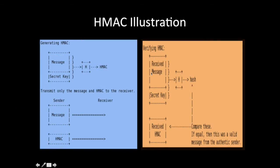On the receiver side, when the receiver gets the message, it calculates the HMAC using its own secret key — this secret key must be shared between the two parties. It then compares that computed value with the received HMAC. If the values are equal, the message is authenticated and valid, meaning there has been no alteration to the message.